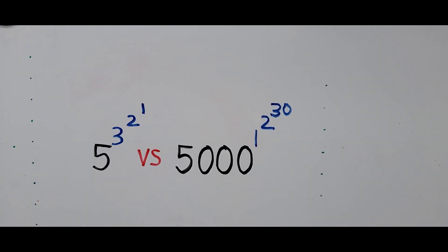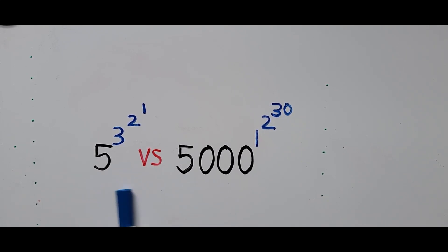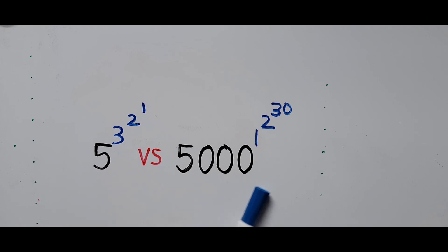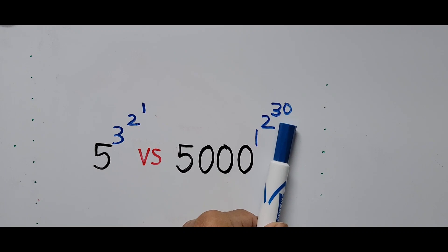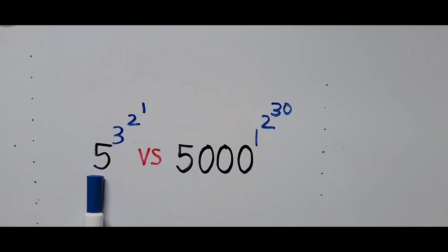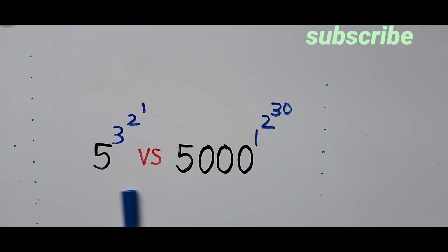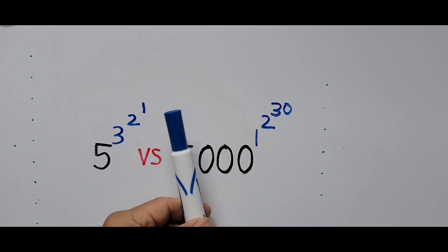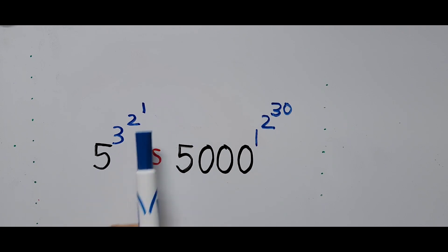At first glance you may say right away that one could be the larger one, but we'll see because we're going to solve them. If you take a look, the exponent 30 is on top of the tower on the right, and on the left is just exponent 1. There are no brackets or parentheses involved, so we proceed by computing from the top of the tower going down to the bottom.